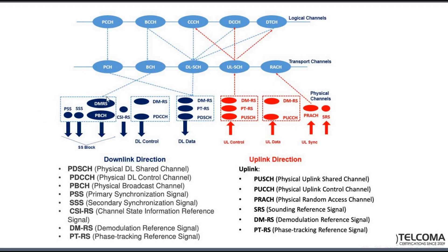As discussed in an earlier slide, the SS Block (Synchronization Signal Block) contains PSS and SSS to calculate PCI, DMRS (Demodulation Reference Signaling), and PBCH for MIB and System MIB information. CSI-RS can also be used for beam management and to identify a particular beam.